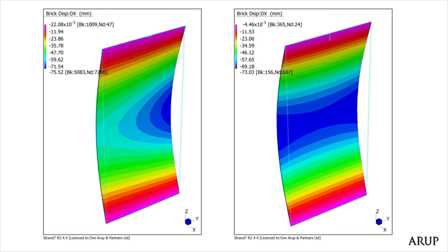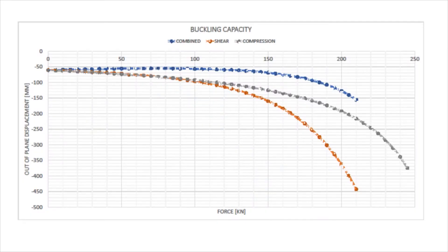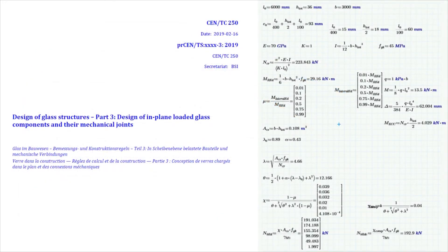Looking at how a panel behaves under applied shear — typical out-of-plane buckling — you can calculate the buckling curve and find the panel takes roughly 200 kN in compression. When combined with initial imperfections, working with others to develop structural codes, you conclude the panel can take 192 kN — a very good correlation to the numerical models.